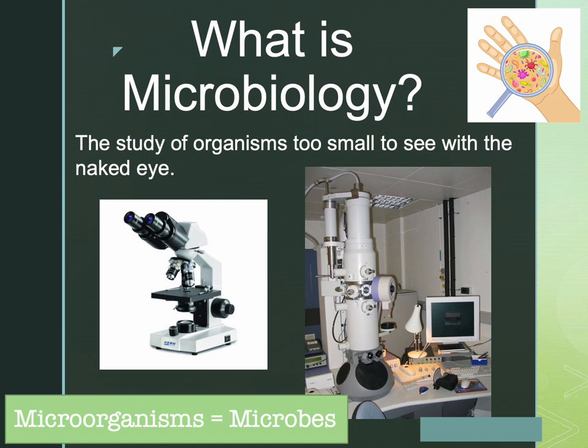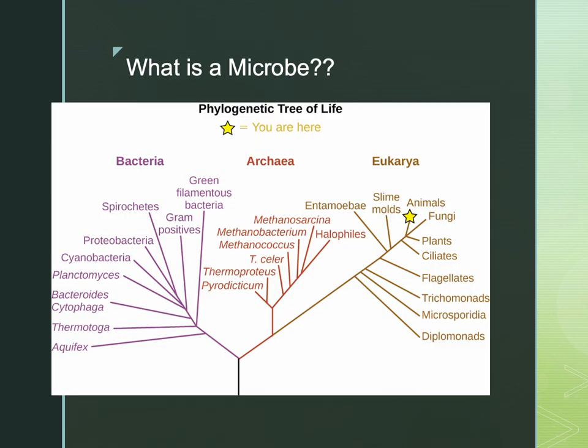We'll be able to see a lot of amazing things with our light microscopes in the lab, but the powerful magnification of an electron microscope allows people to see even tinier things than bacteria, like viruses. So now we know microbes are tiny. But of all the living things on Earth, what exactly is a microbe? Who belongs to that group?